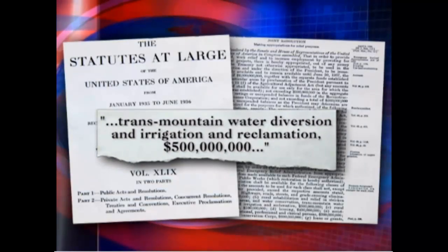He blames the government for not letting the farmers draw enough water for their crops because of the drought conditions that have lowered the reservoir levels. The construction of that reservoir, which was originally authorized as part of the 1935 Emergency Relief Appropriation Act — a $500 million stimulus bill allocating funds for 'Trans Mountain Water Diversion and Irrigation' — means the government should stop meddling in the business of farmers who would actually still be living in a desert if not for government meddling.